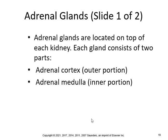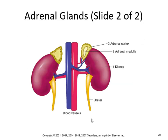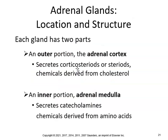Adrenal glands are located on top of each kidney, so you have two of those. Each gland consists of two parts: the adrenal cortex, which is the outer portion, and the adrenal medulla, which is the inner portion. The right kidney sits a little bit lower than the left. The adrenal cortex secretes corticosteroids or steroids, chemicals derived from cholesterol. The adrenal medulla secretes catecholamines, chemicals derived from amino acids.